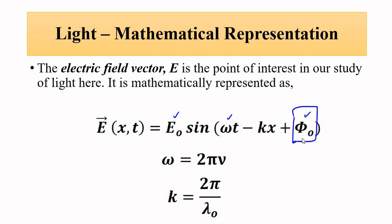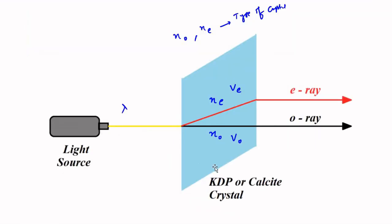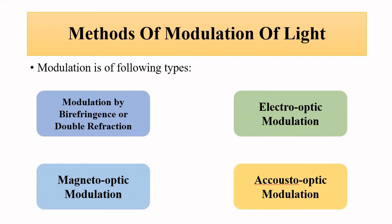So this is the modulation of light by the process of double refraction using a birefringent — doubly refractive — crystal. We have discussed this method and will be discussing other methods in upcoming videos. I hope you like this video; please subscribe to Engineering Tutorial for more videos related to engineering, science, and technology. Have a great day, thank you very much.